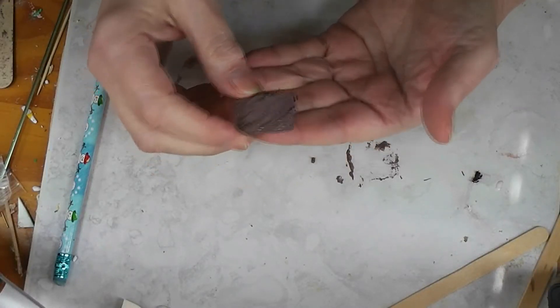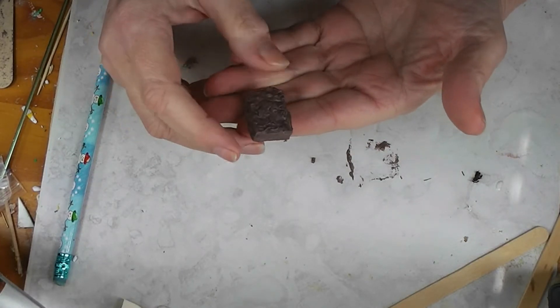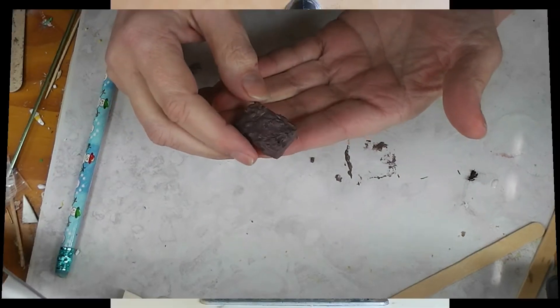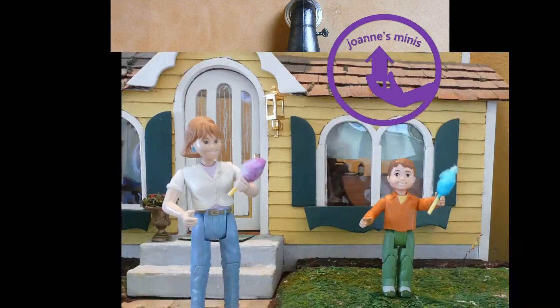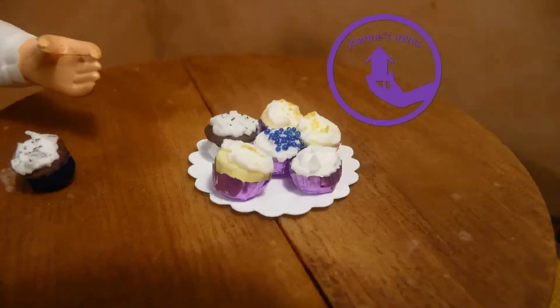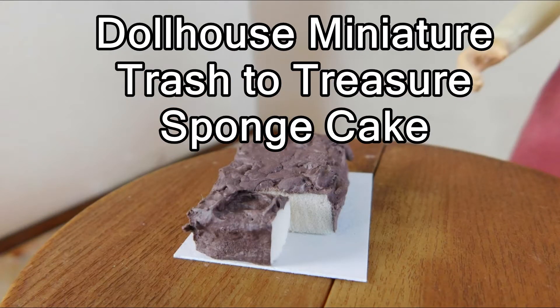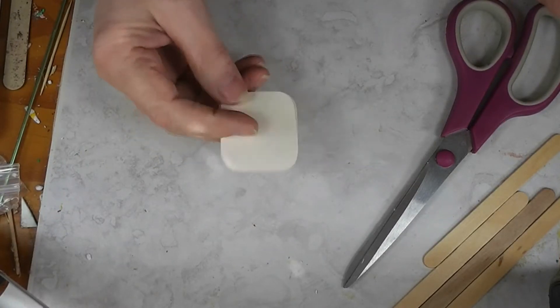All right guys, so today we are making a trash to treasure project of a little sheet cake for the dollhouse. Stay tuned and see how fun and easy this is to make. We're making a sponge cake today for our trash to treasure project, and this is made of a sponge, so it's literally a sponge cake.